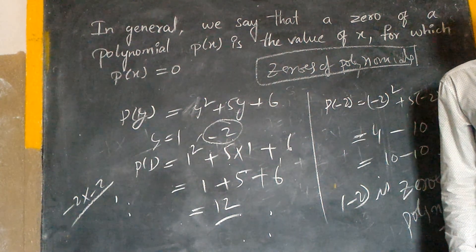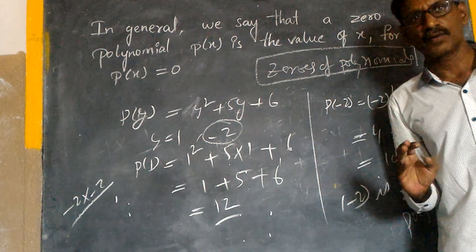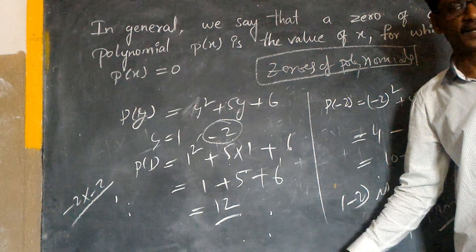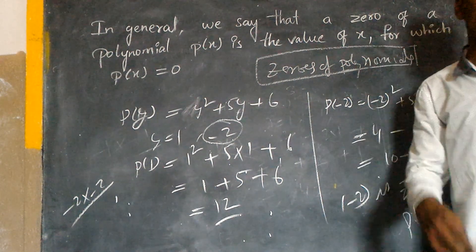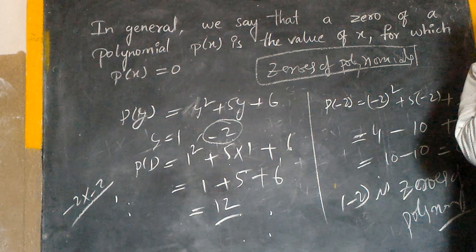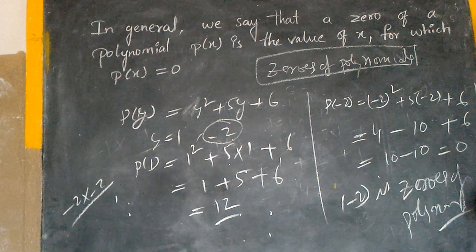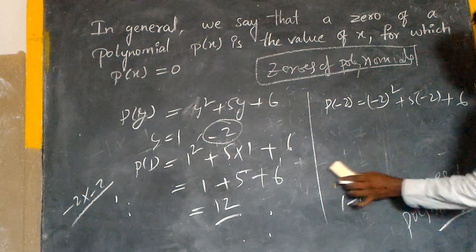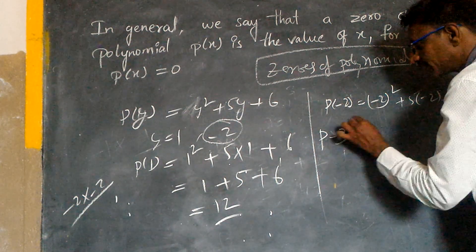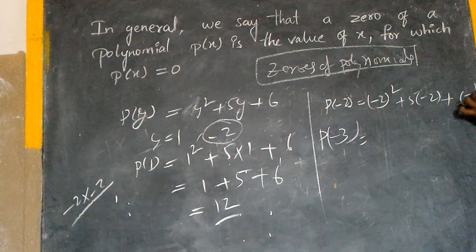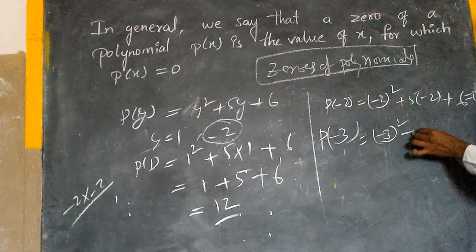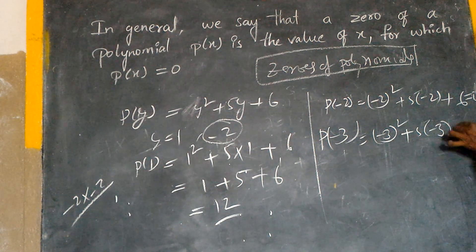Polynomial values are 0. If the power of x is equal to 2, there are minus values. The power of x equal to zero means two zeros are equal to zero. P of minus 3: minus 3 whole square plus 5 into minus 3 plus 6.